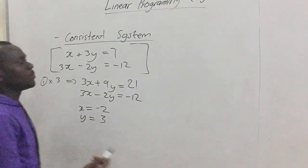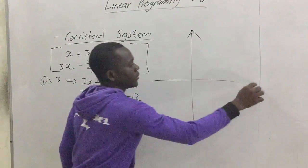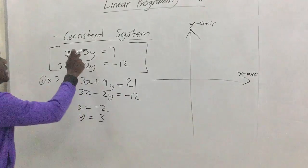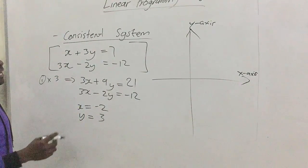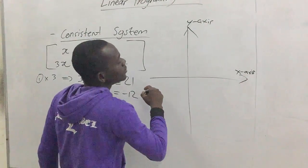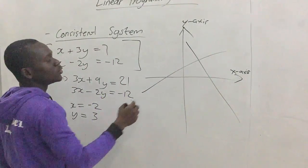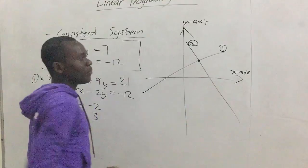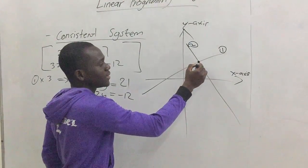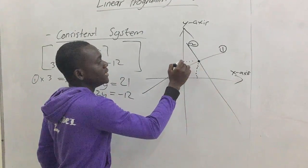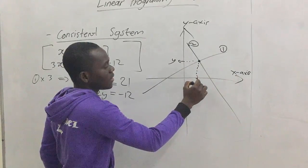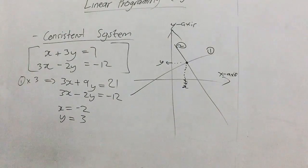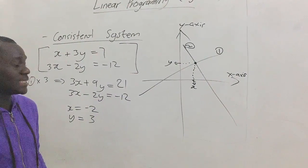To represent this graphically, when we have our Cartesian plane with the y-axis and the x-axis, and we draw these two equations on the number plane, the two lines meet at a particular place — an intersection point. When we trace that intersection to the x-axis and to the y-axis, one gives us the value of y and the other gives us the value of x. So a consistent system gives a consistent solution where the two lines intersect at exactly one point.